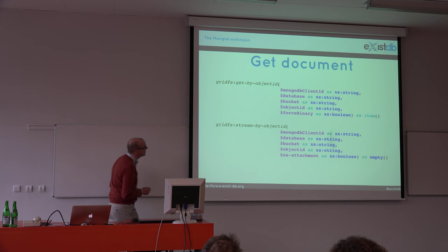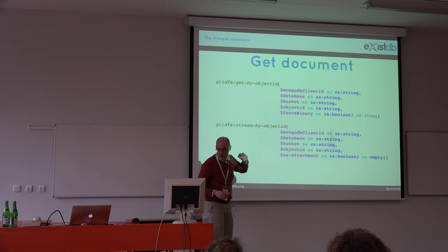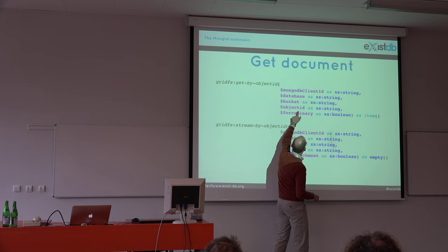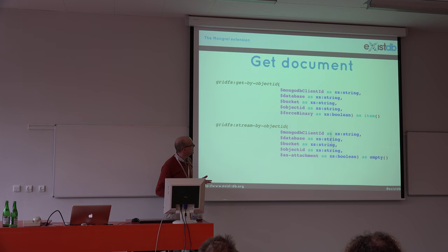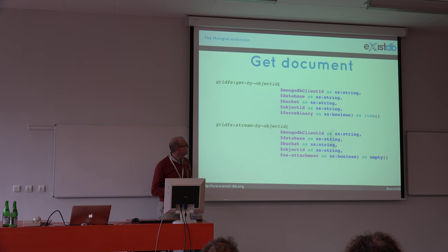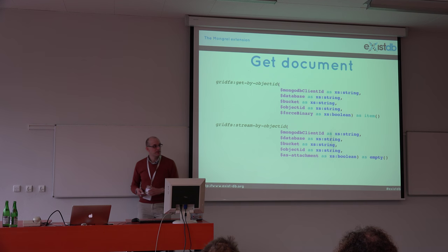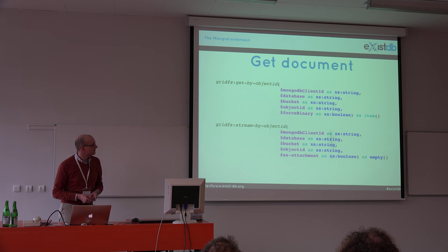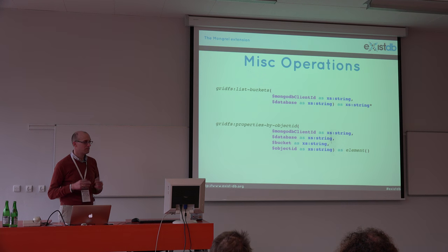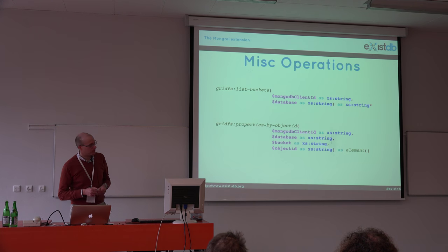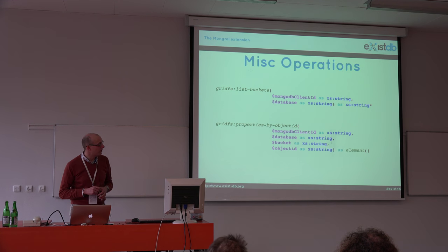Retrieving the document: basically there are two patterns. One is really retrieving the document using the object ID which you receive when you store a document — the return can be a string, an XML fragment, a binary document, anything. For efficiency purposes I added another function where you can directly stream the content of the object to your HTTP output stream so it will be moved directly outside. You can also remove a document, get a list of buckets, and retrieve additional property information about stored objects.